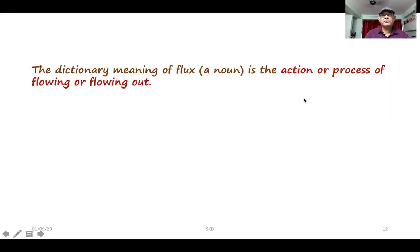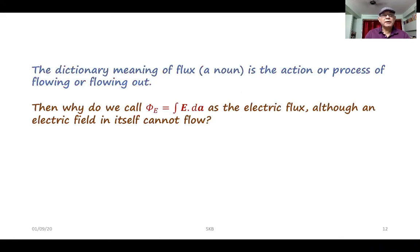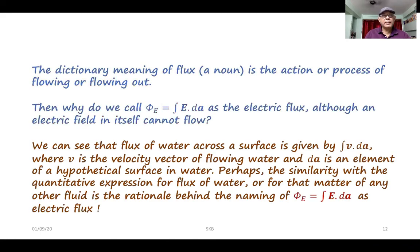The dictionary meaning of flux, which is a noun, is the action or process of flowing or flowing out. Then why do we call phi_E equal to the integral of E dot dA as the electric flux, although an electric field itself cannot flow? We can see that the flux of water across a surface is given by the integral of V dot dA, where V is the velocity vector of the flowing water and dA is an element of a hypothetical surface in the water. Perhaps the similarity with the quantitative expression for flux of water, or of any other fluid, is the rationale behind naming phi_E equal to the integral of E dot dA as electric flux.